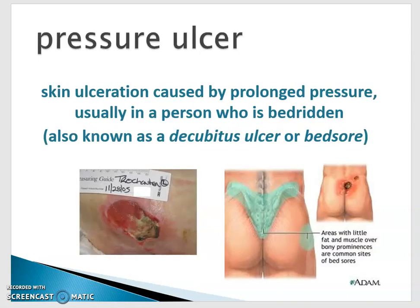A pressure ulcer or decubitus ulcer is a particular type of ulcer. If any of you work as caregivers or have had someone in a skilled nursing facility — something we refer to as a SNF — they're not as common as they used to be. A pressure ulcer is a skin ulceration caused by prolonged exposure, usually in a person who's bedridden. People who can't get out of bed have to be rotated every few hours. If you don't, the pressure of bone bearing down on skin against the mattress without relief causes the skin to break down.